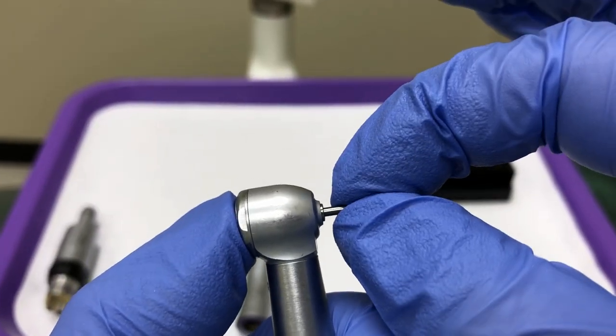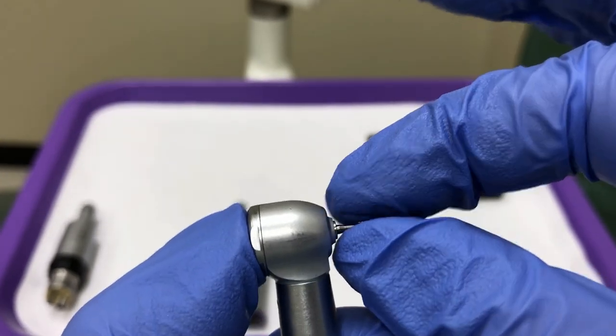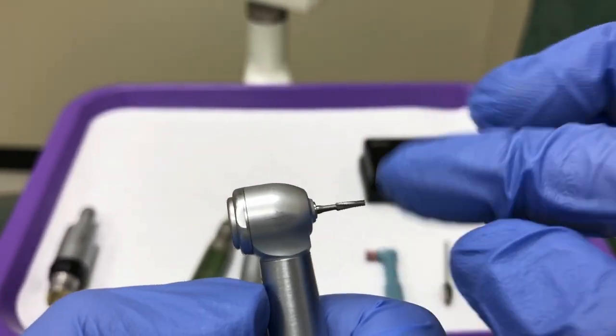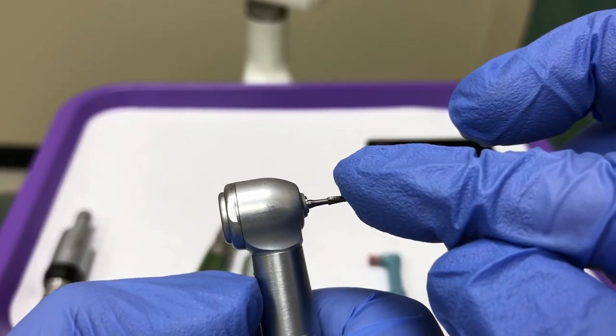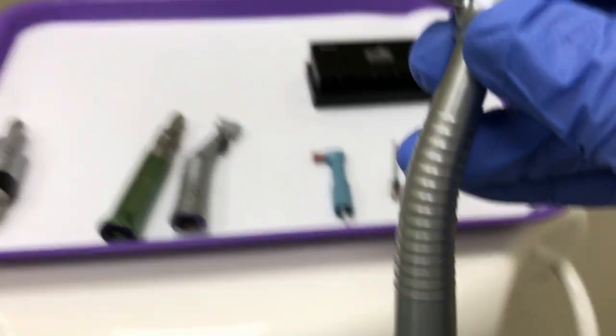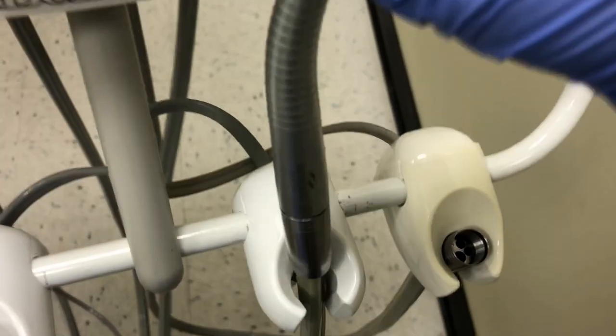Firmly push the burr into the handpiece while you're pushing on the back locking mechanism. Never push on the tip of the burr with your finger. The burrs are sharp and can easily puncture your glove and finger. Once it is assembled, you can hang it up on the appropriate holster.